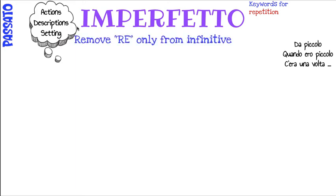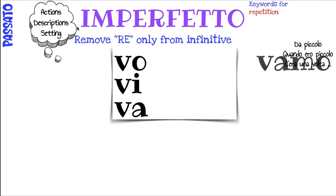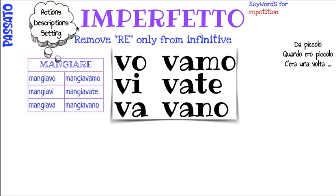To conjugate the verb, you will take your infinitive, remove the RE from the infinitive, and then add these endings. So, mangiare — you keep mangià, you only remove the RE. So then you'll have mangiavo, mangiavi, mangiava, mangiavamo, mangiavate, mangiavano.